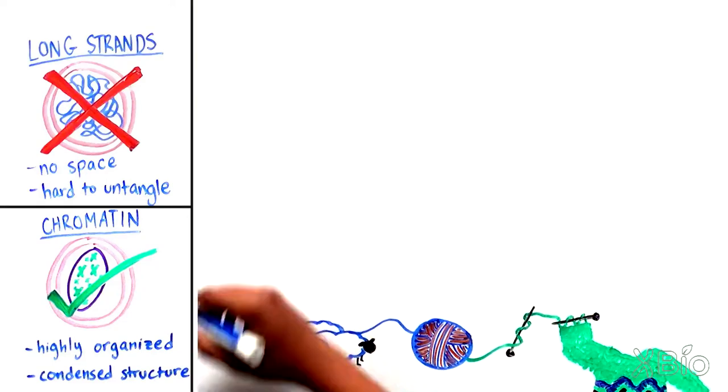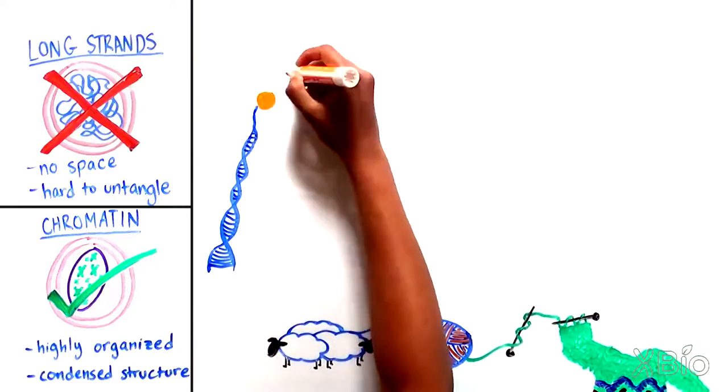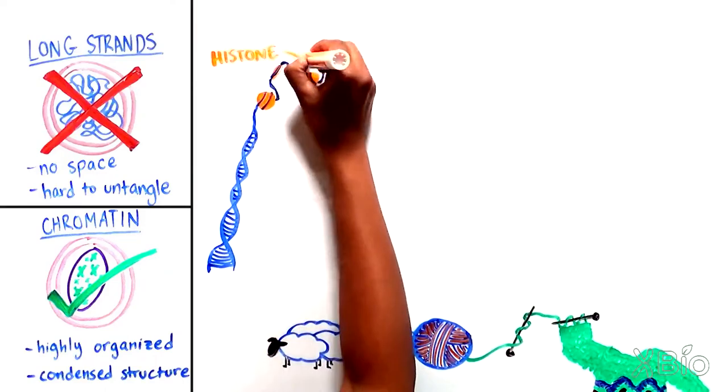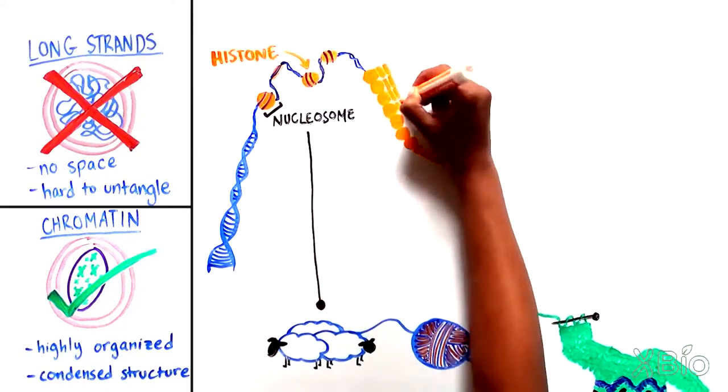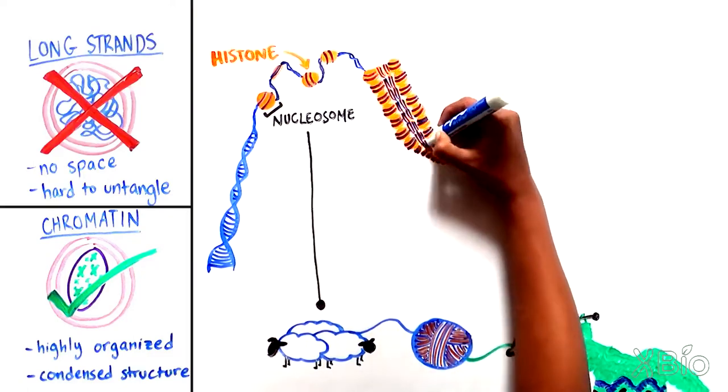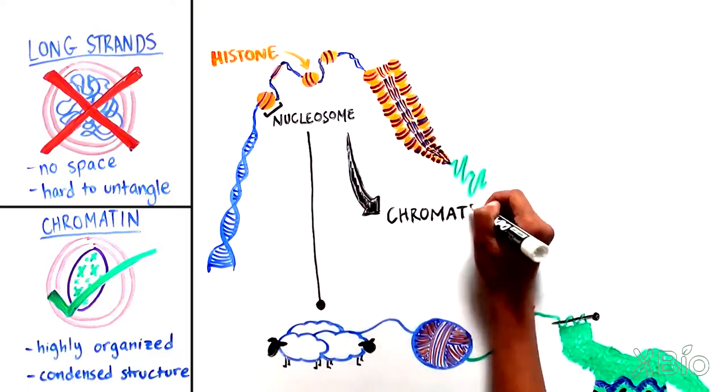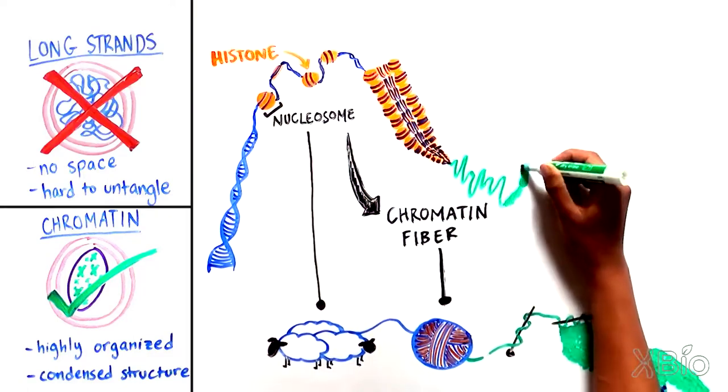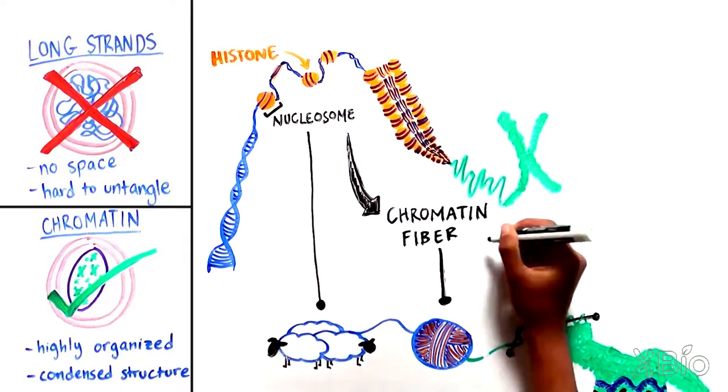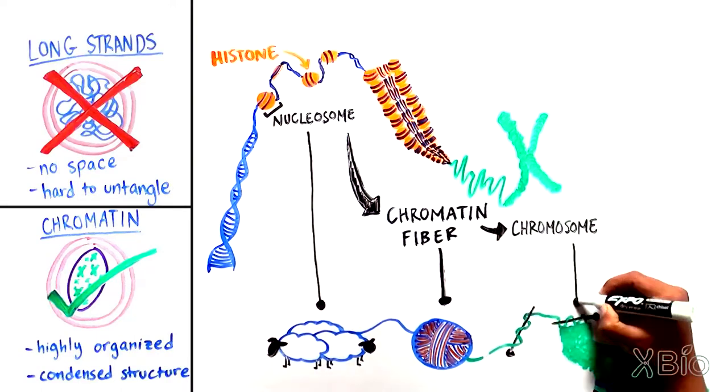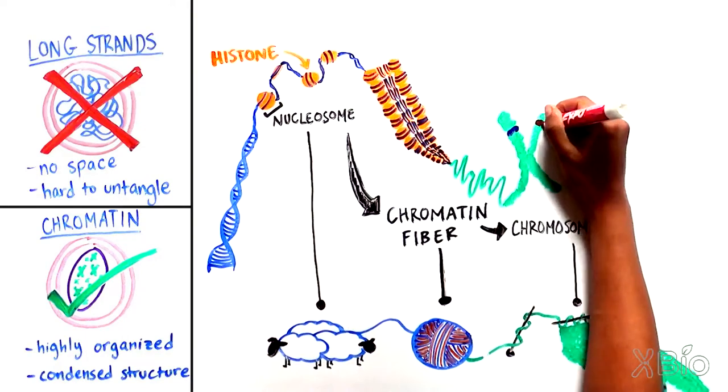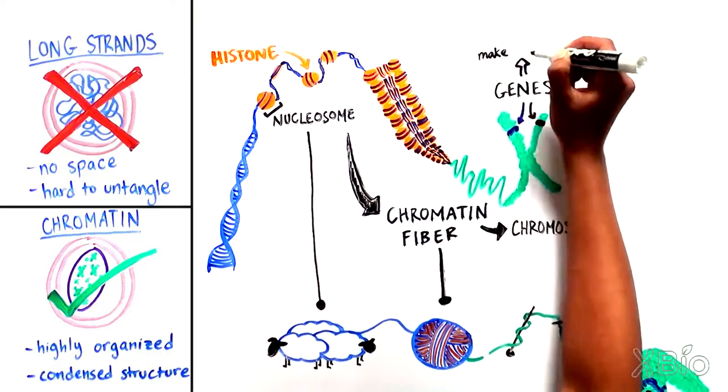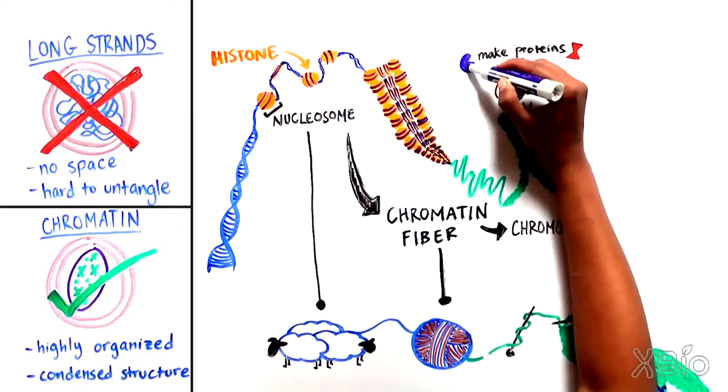First, a small segment of the DNA double helix is wrapped around a collection of proteins called histones, which forms a structure called a nucleosome. Nucleosomes then fold on top of each other into a single chromatin fiber. From here, the chromatin fibers are further coiled and intertwined into a chromosome, which organizes our genetic information in the form of genes, units of DNA that provide instructions to make proteins.